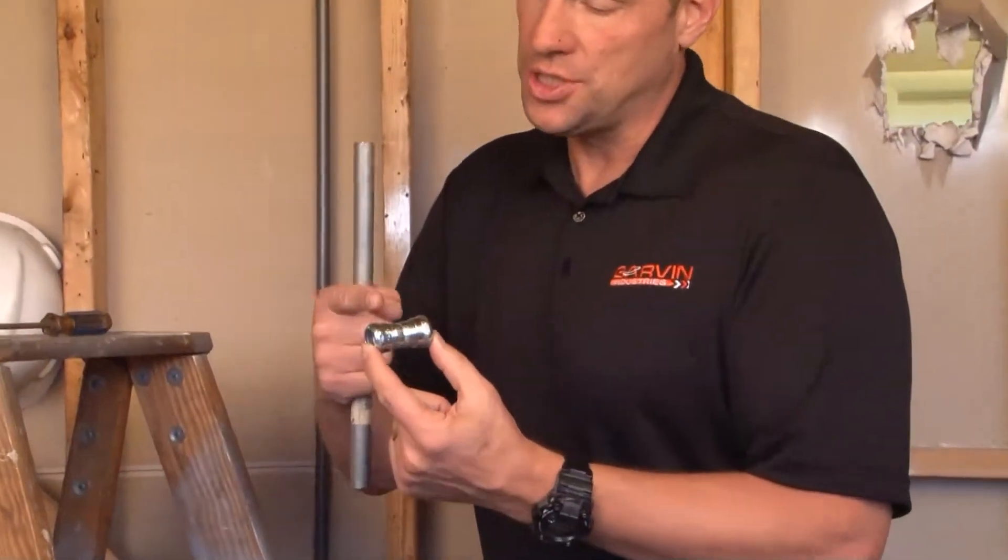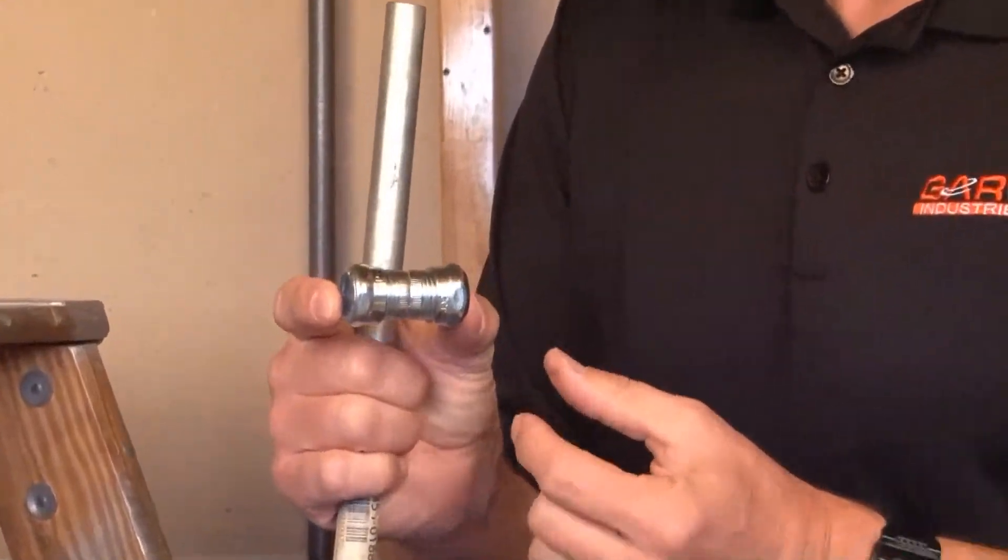Part number CCP50 is a half-inch EMT compression coupling. As you can see, it's made from rigid steel.